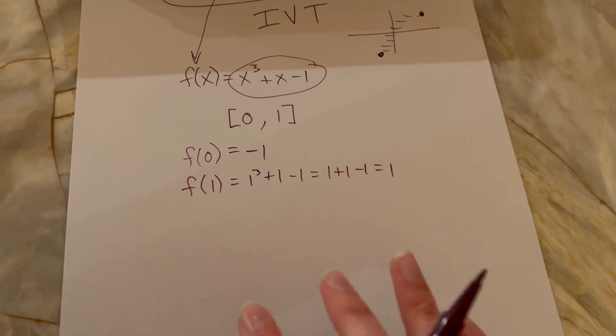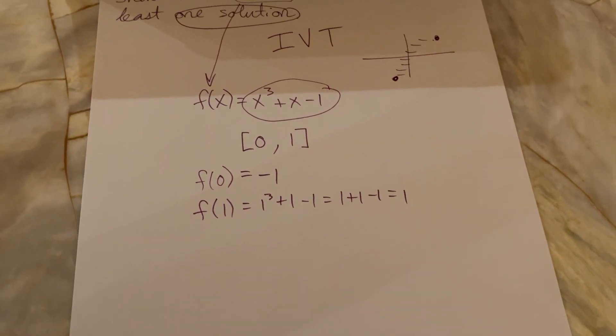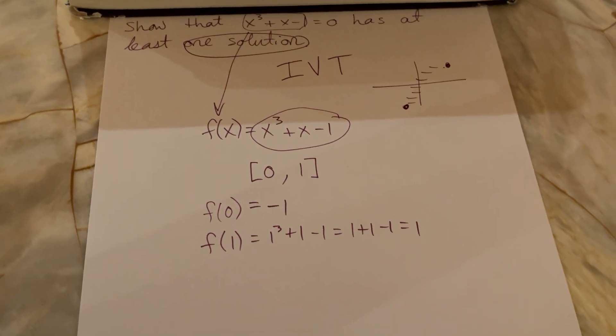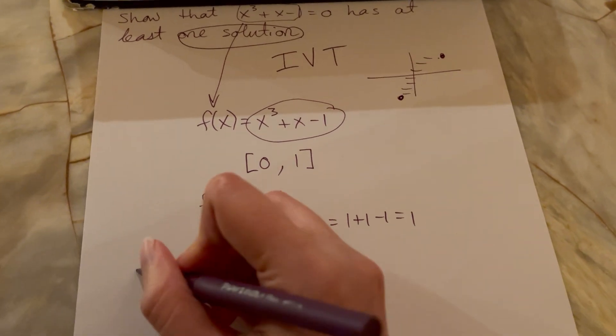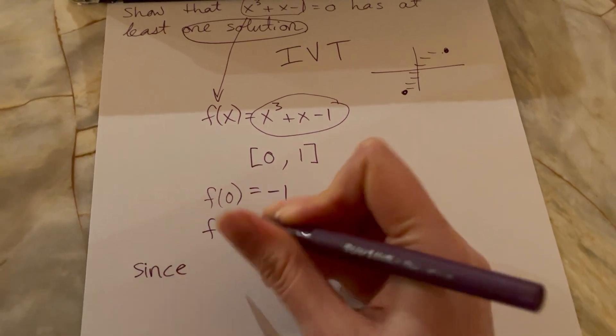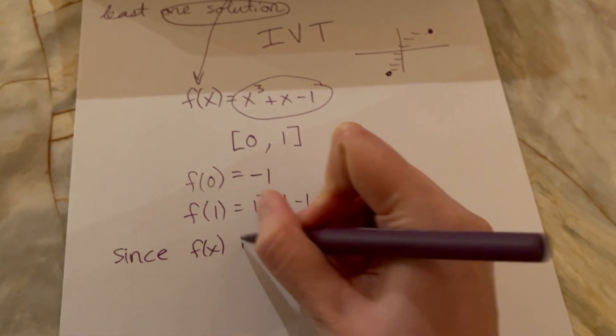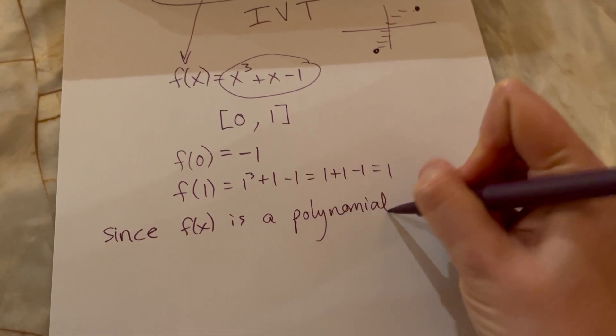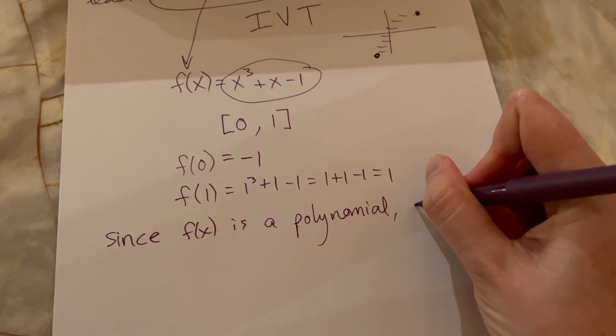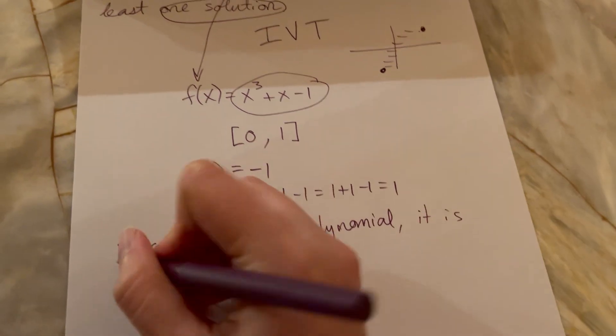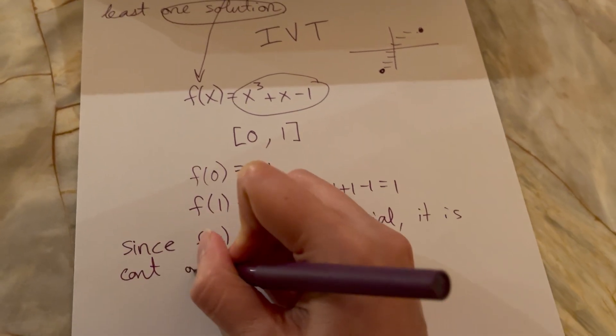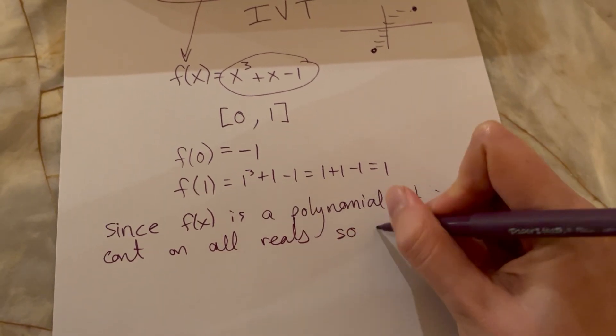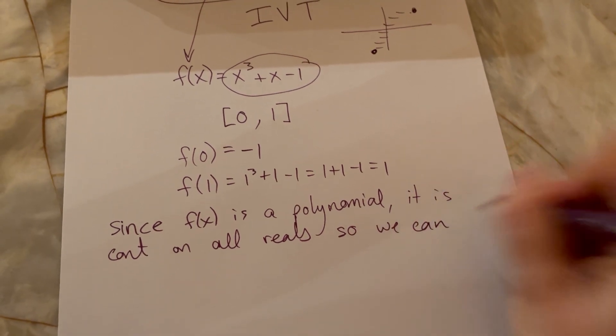So what you could say for your final justification, if it asks you to justify your answer and it wants a nice solution with reasoning and theorems, you could say since f(x) is a polynomial, it is continuous on all real numbers, so we can apply the Intermediate Value Theorem.